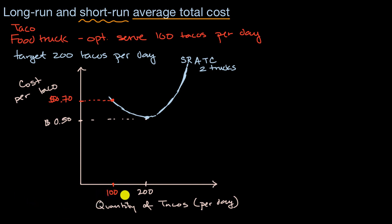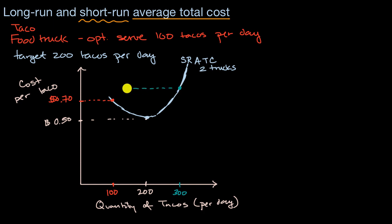Then there's the other scenario: let's say our tacos sell better than expected and we need to produce 300 tacos per day. If we can't change our fixed costs — which is by definition what the short run is — then we might be at a cost of about 80 cents per taco as our short-run average total cost.